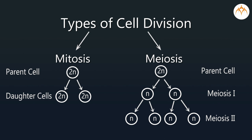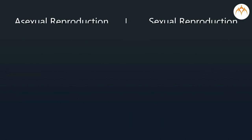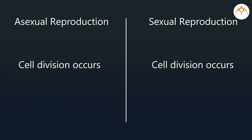Due to reproduction, new individuals are added to the population and thus species continues to live on the earth. A sufficient number of organisms avoid species extinction. The two types of cell division studied earlier — mitosis and meiosis — play an important role in reproduction. When a new generation is formed by mitosis involving only one parent, it is referred to as asexual reproduction.